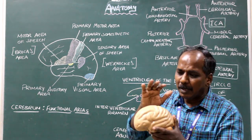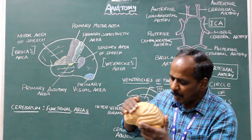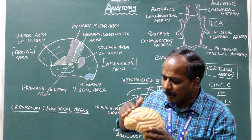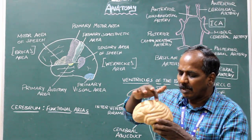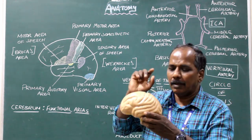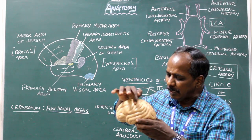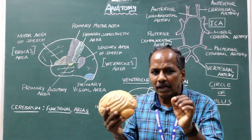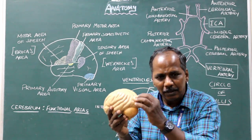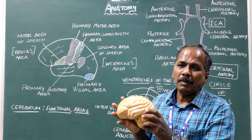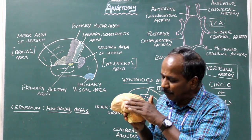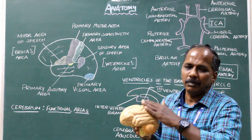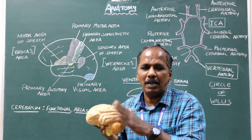Lobes of the cerebrum. Each cerebral hemisphere has four lobes: frontal lobe, parietal lobe, occipital lobe, and temporal lobe. The frontal lobe is the area anterior to the central sulcus. The parietal lobe lies between the central sulcus and the parieto-occipital sulcus. The occipital lobe is behind the parieto-occipital sulcus. The temporal lobe is below the lateral sulcus, which separates it from the frontal and parietal lobes.